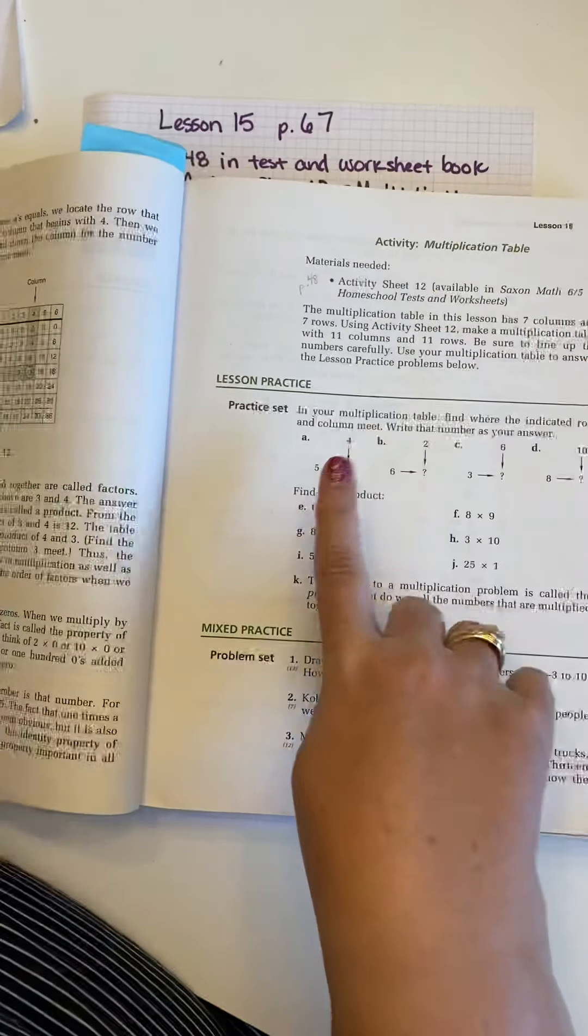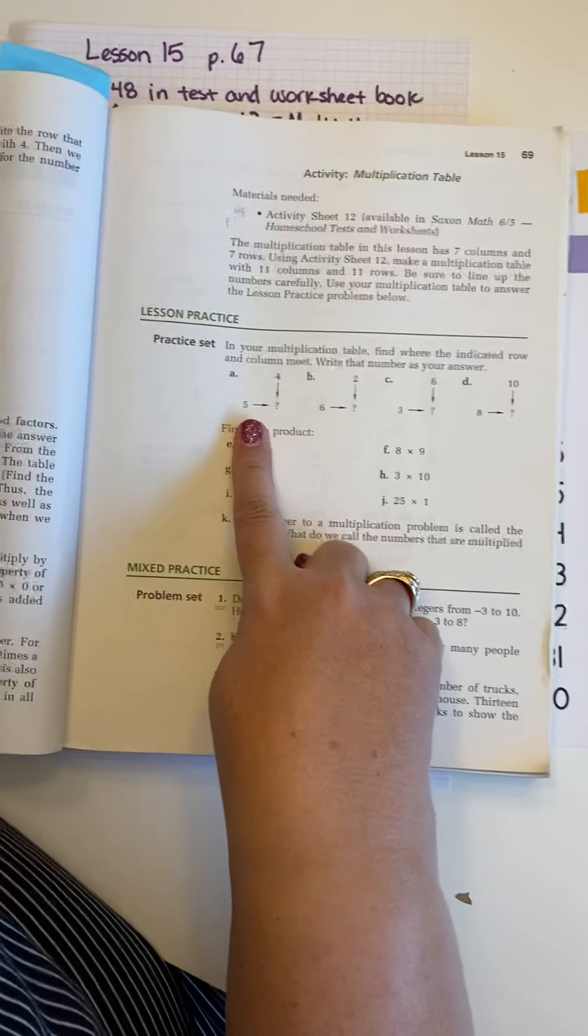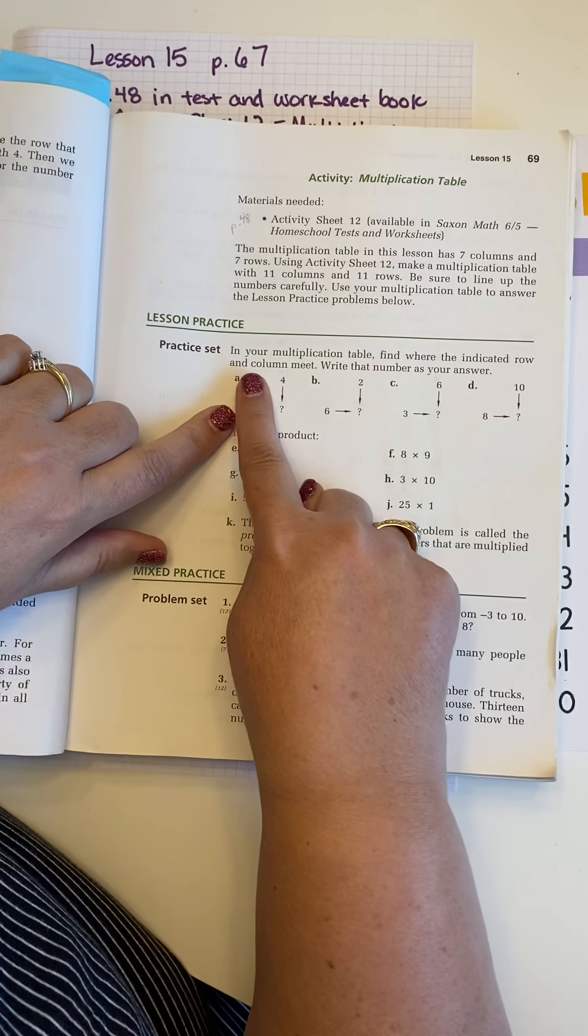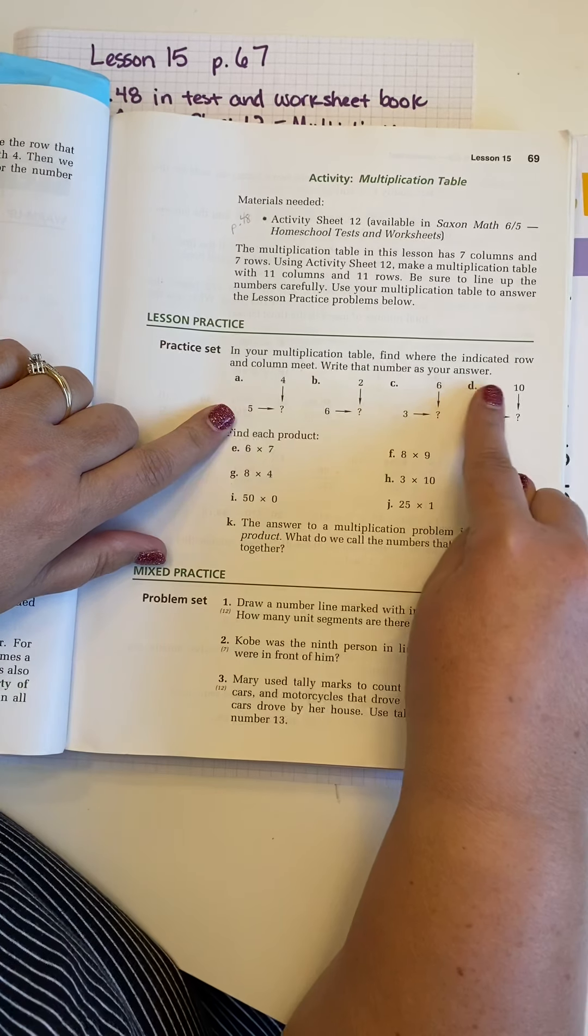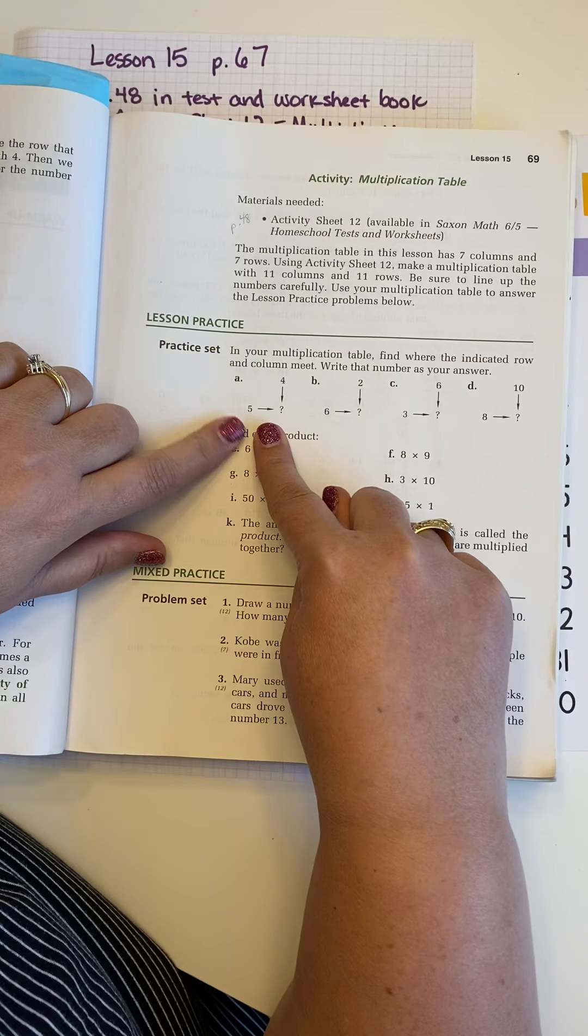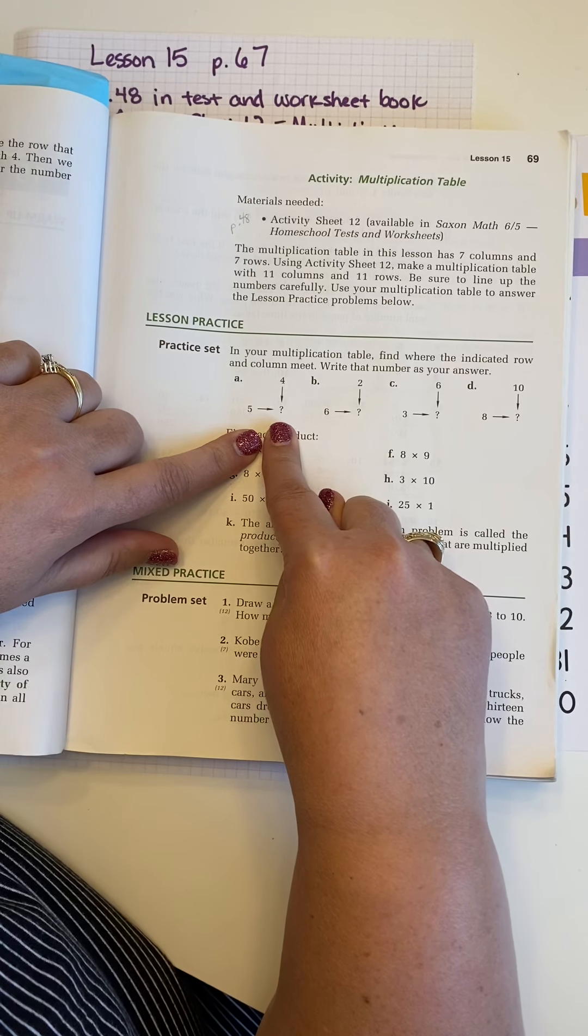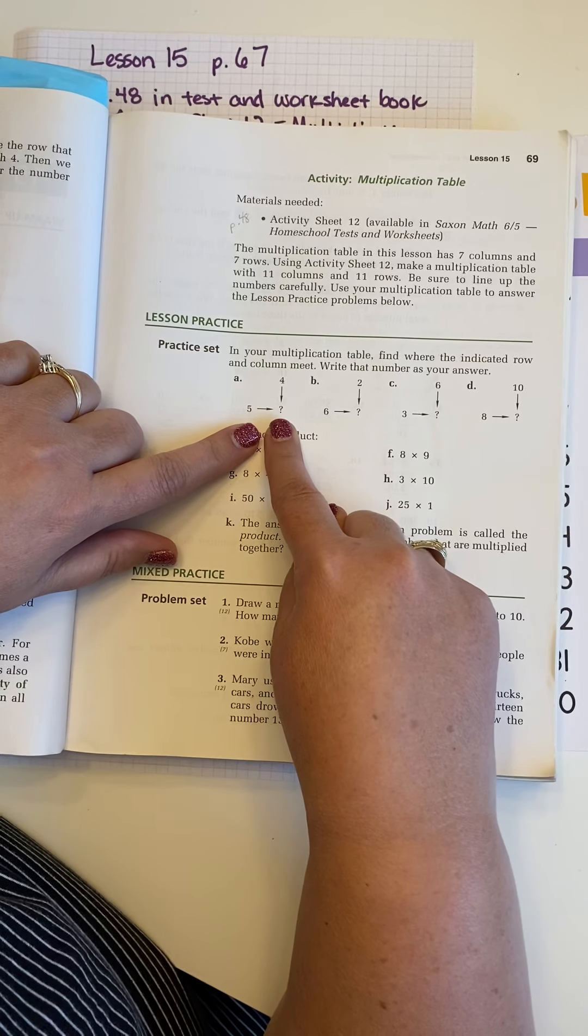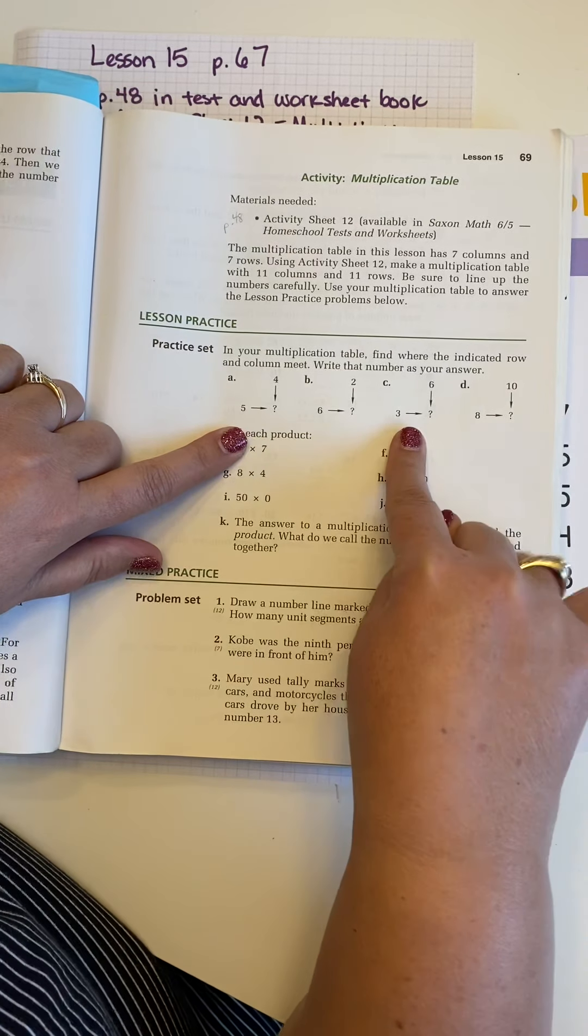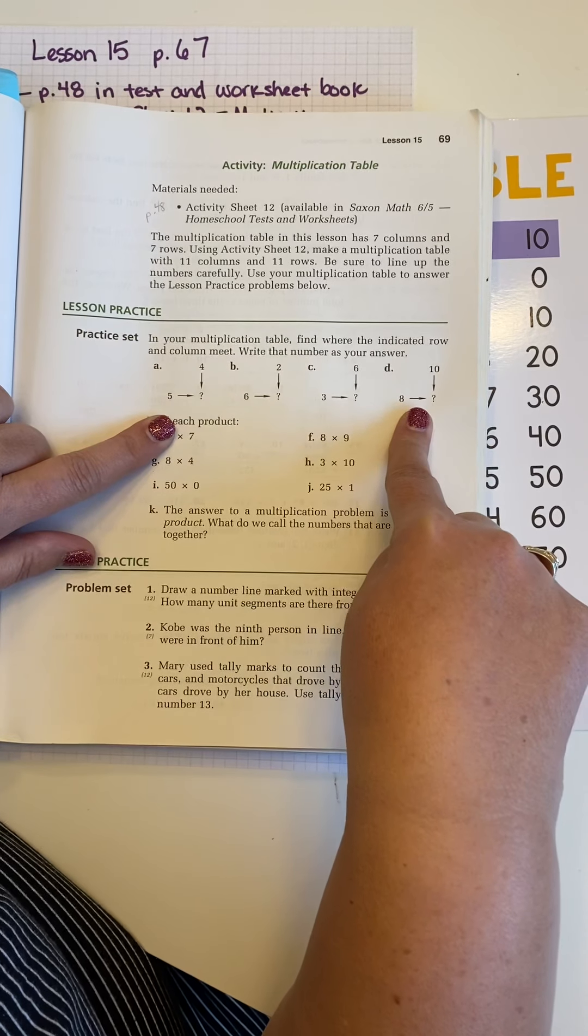Let's see here. So let's look at letter A. Let me make sure I have that on the screen for you. So letter A, it's going to tell you to use a multiplication table to find where the row and column meet. Write that number as your answer. So, and we have a 4 and a 5. Now, if you know how to multiply without a multiplication table, this is simply saying what is 4 times 5? What is 6 times 2? What is 3 times 6? And what is 8 times 10?